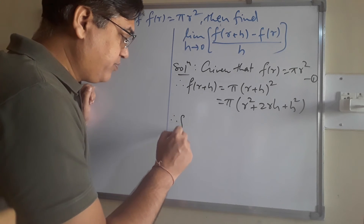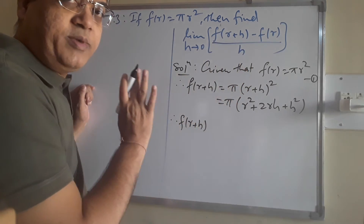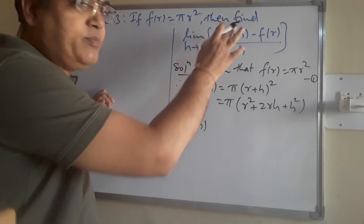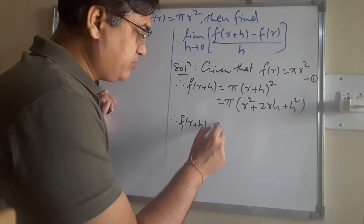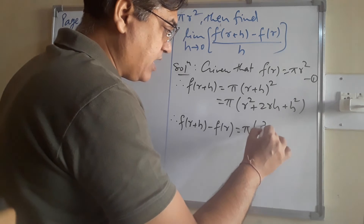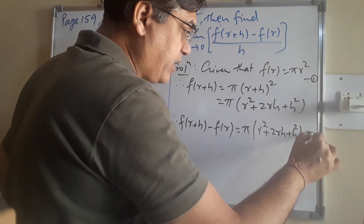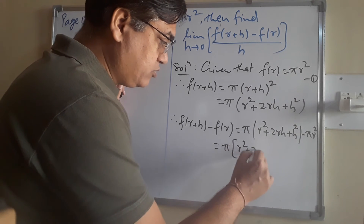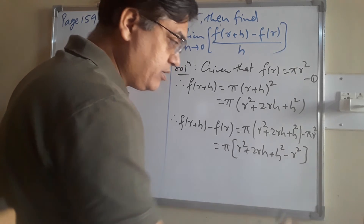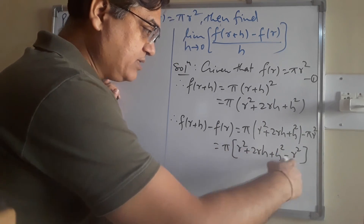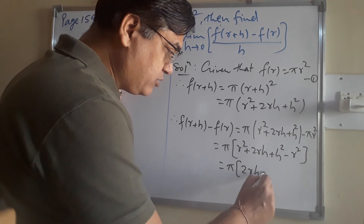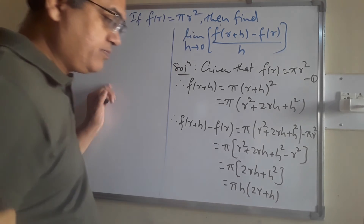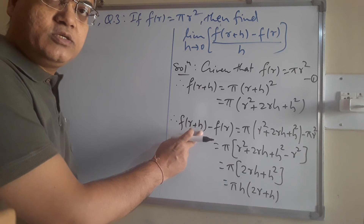Given f(r) = πr². We need f(r plus h), so replacing r with r plus h: f(r plus h) = π(r plus h)² = π(r² + 2rh + h²). The subtraction f(r plus h) minus f(r) = π(r² + 2rh + h² minus r²) = π(2rh + h²). Taking h common: this equals πh(2r plus h).